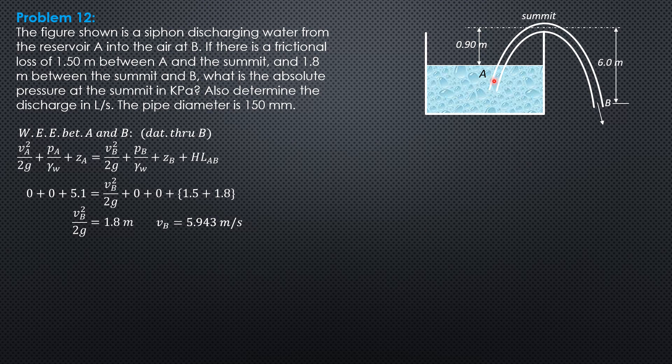Then, we write energy equation again between A and the summit, and let's select this time the datum through A. So the equation will be velocity head at A, 0, pressure head at A, 0, elevation head 0,